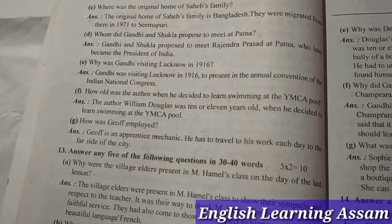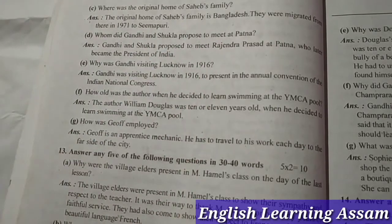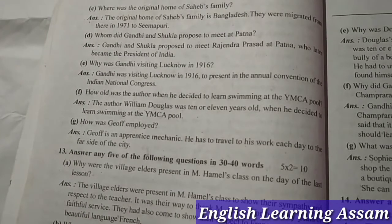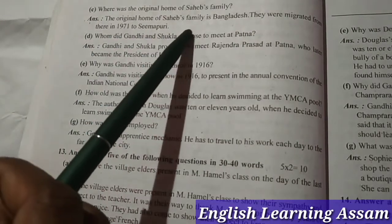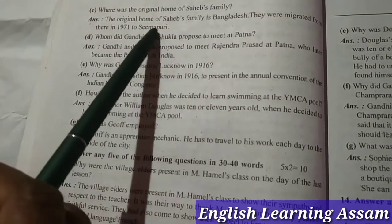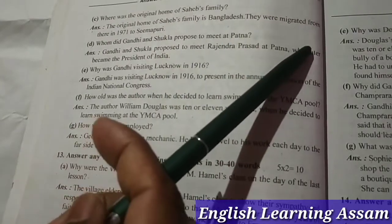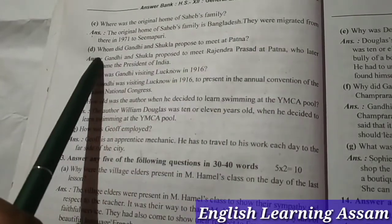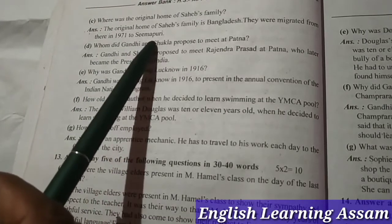Question C: Where was the original home of Saheb's family? Answer: The original home of Saheb's family was in Bangladesh. They migrated from there in 1971 to Seemapuri.